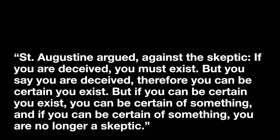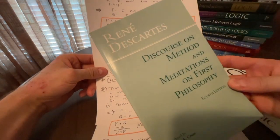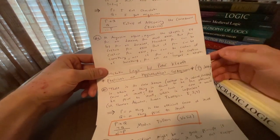But if you can be certain you exist, you can be certain of something. And if you can be certain of something, you are no longer a skeptic. So there's a lot of stuff going on there. You have more than just P and Q. And also it's very reminiscent of a famous argument from René Descartes, which we have a series on this YouTube channel. So Descartes uses a kind of similar argument to Augustine.